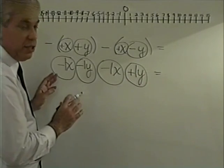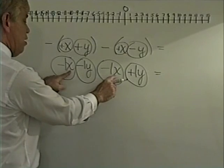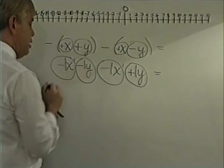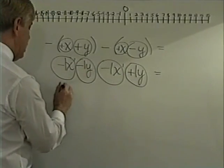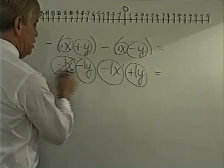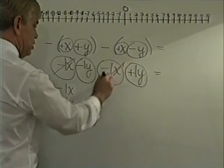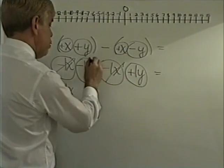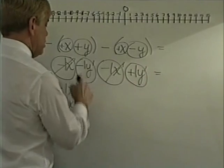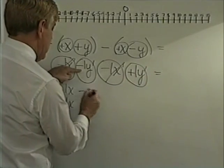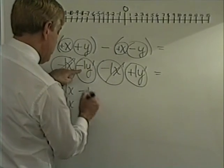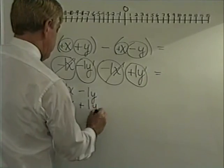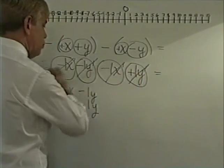So we say what are the like terms? The x's are alike because they are the same letter with the same exponent of a one being up here on each. So we can combine those. A negative one x, and a negative one x. Then we say these are also like terms because they're both y's, they're both to the first power. We bring this one down as a minus y, one, minus one y, and a positive one y.